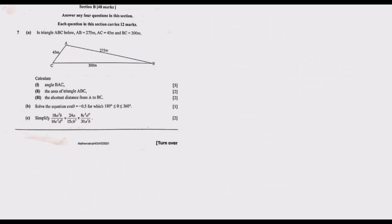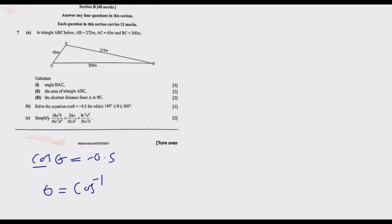Now let's go to part (b): solve the equation cos θ = negative 0.5, where θ lies between 180° and 360°. We introduce the inverse cosine, so θ equals cos inverse of 0.5 — the negative sign tells us in which quadrant cosine is negative. When we calculate cos inverse(0.5), we get 60 degrees as our reference angle.